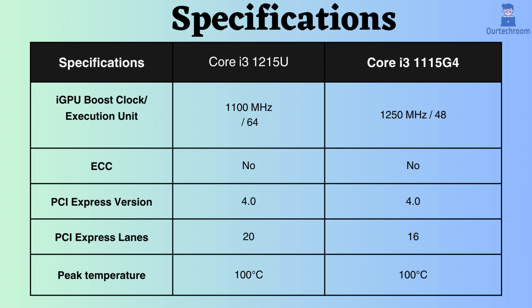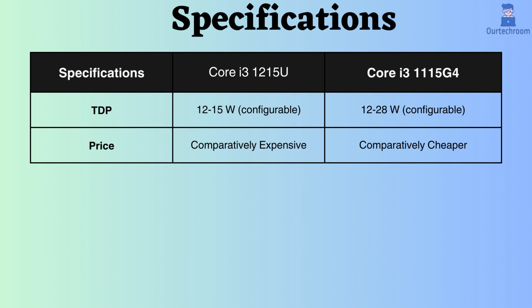The peak temperature supported for both processors is 100 degrees Celsius. The TDP of both processors is configurable. The TDP of the Core i3-1215U ranges from 12 to 15 watts, while that of the Core i3-1215G4 ranges from 12 to 28 watts. Due to its lower TDP, we can say that the Core i3-1215U has better power consumption efficiency.